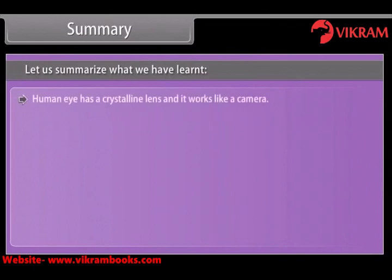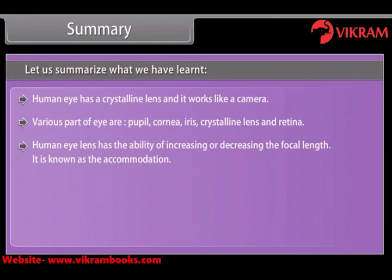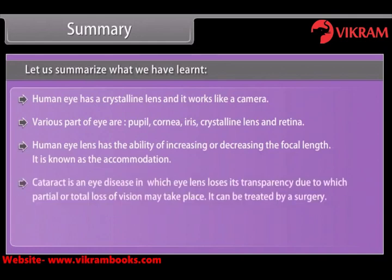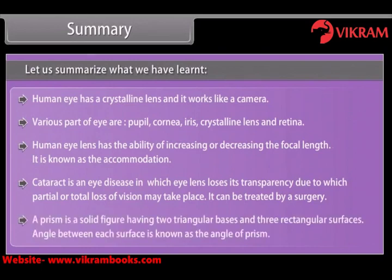Human eye has a crystalline lens and it works like a camera. Various parts of the eye are: pupil, cornea, iris, crystalline lens, and retina. Human eye lens has the ability of increasing or decreasing the focal length — it is known as accommodation. Cataract is an eye disease in which the eye lens loses its transparency, due to which partial or total loss of vision may take place. It can be treated by surgery. A prism is a solid figure having two triangular bases and three rectangular surfaces, and the angle between each surface is known as the angle of prism.